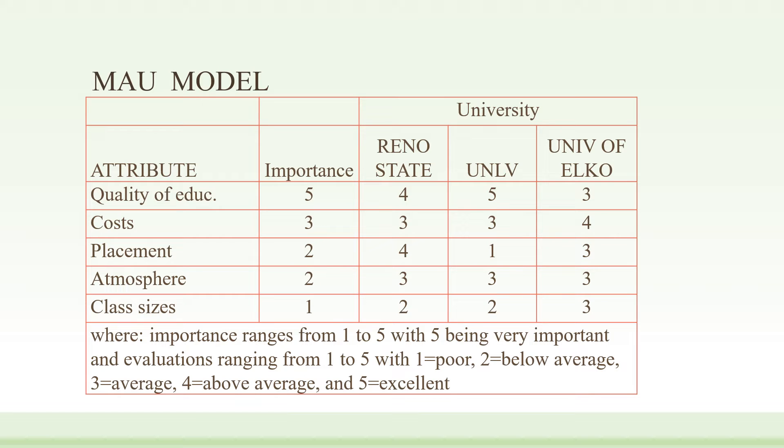We then asked parents and students to evaluate these three universities on these five attributes. Take, for example, quality of education. We asked them to evaluate how good the quality of education is on a scale of one to five, where one is poor and five is excellent. On quality of education, UNLV scored five out of five, which is as good as you can get. Reno State got four out of five, and the University of Elko got three out of five.